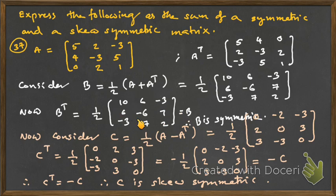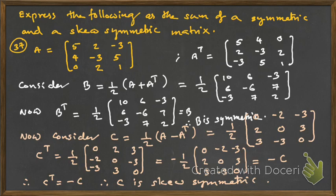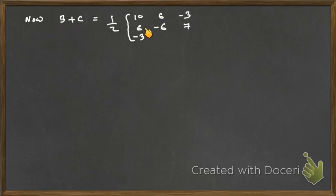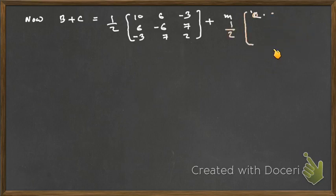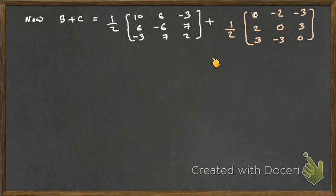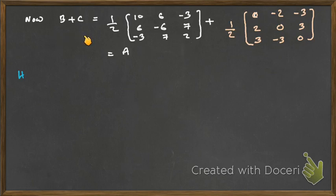We found symmetric matrix B and skew-symmetric matrix C. Adding B + C: keeping ½ outside, the A^T and −A^T terms cancel, leaving ½(2A) = A. So the original matrix is expressed as the sum of a symmetric and a skew-symmetric matrix, confirming the result.